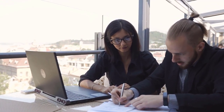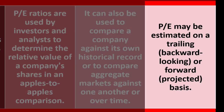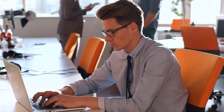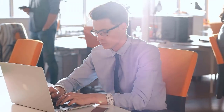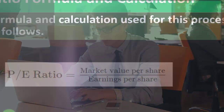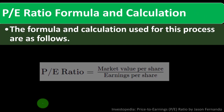P/E may be estimated on a trailing, backward-looking basis or a forward projected basis. We might look at actual historical data that has already occurred, or we might try to make a forward projection because we're using it for future decision-making purposes. That forward-looking perspective might be more useful for our current time frame.